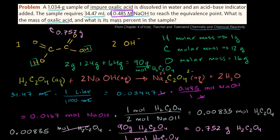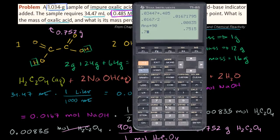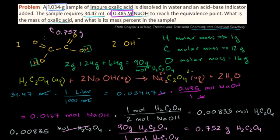Now the next part: what is its mass percent in the sample? The sample of impure oxalic acid was 1.034 grams. We need to find what percentage 0.752 is of 1.034. So 0.752 divided by 1.034 equals 72.7%. The answer to the second part is 72.7%. We figured out that this impure oxalic acid sample is 72.7% actual oxalic acid.